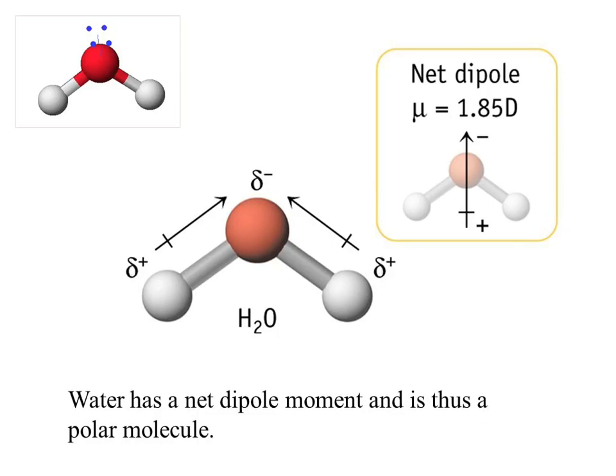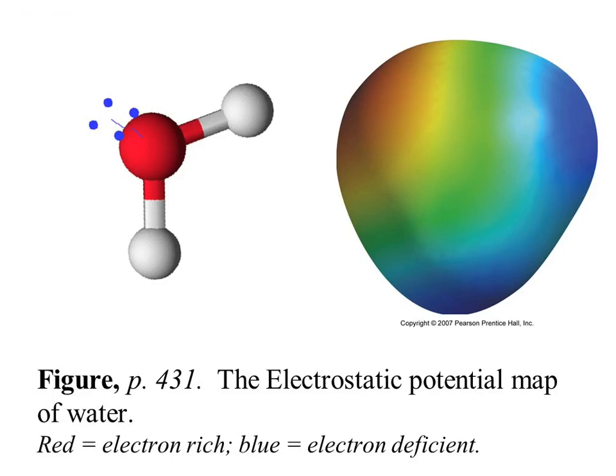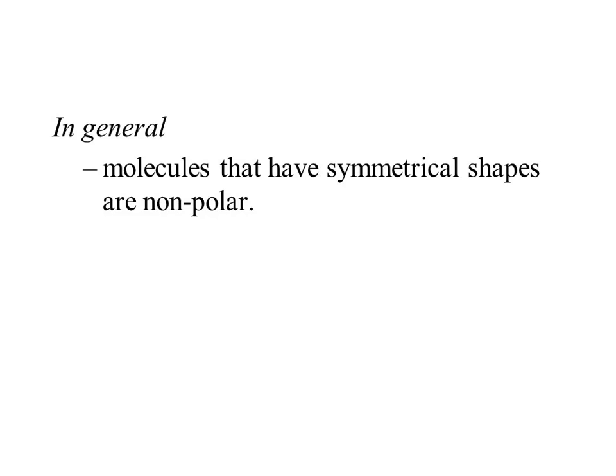That makes water a polar molecule. We also talked about the electrostatic potential maps where red color means electron rich — that would be over the oxygen — and blue means electron poor, which would be over both hydrogens. You need to look at the individual bond polarities to understand the polarity of the molecule.